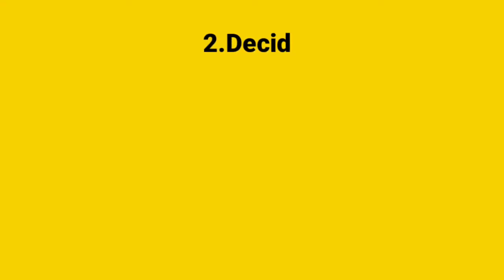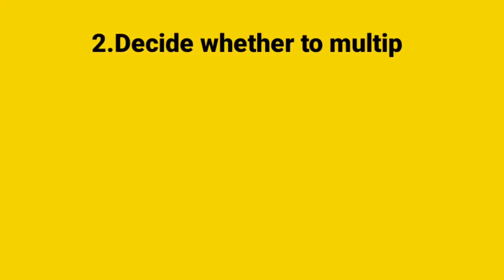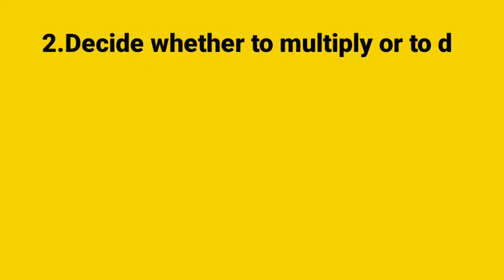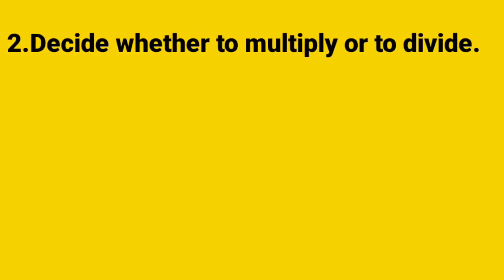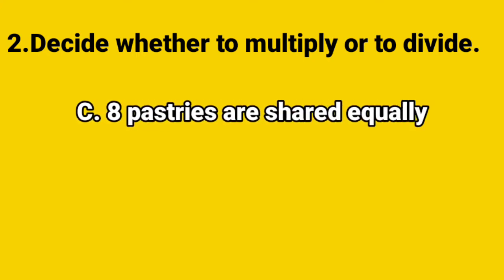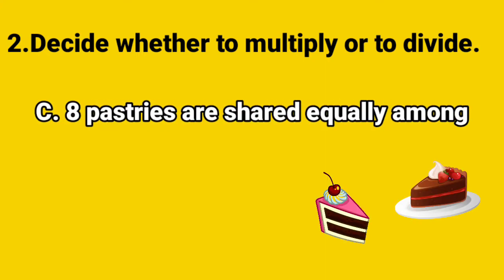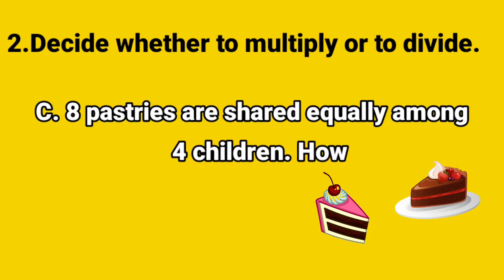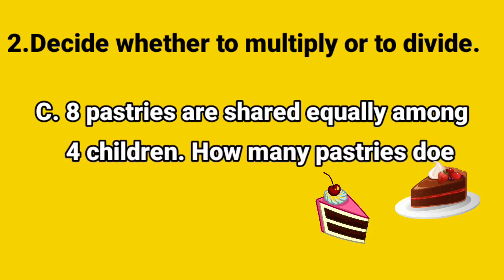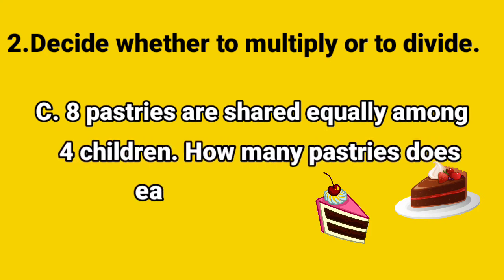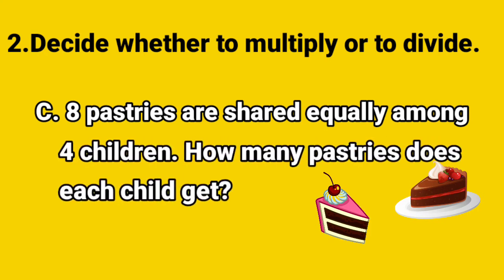Decide whether to multiply or to divide. Now we will see C. 8 pastries are shared equally among 4 children. How many pastries does each child get?